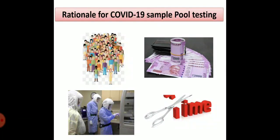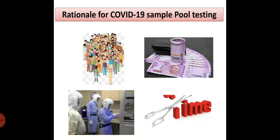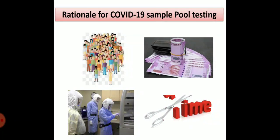Look at the manpower reduction. When you want to screen a large population you need high manpower — technicians, scientists, physicians. Pooling will really reduce the required manpower. Time is also remarkably reduced. Usually when you extract a sample and do real-time PCR, one reaction takes roughly three to four hours. By doing this sample pooling method you can really reduce the time as well.